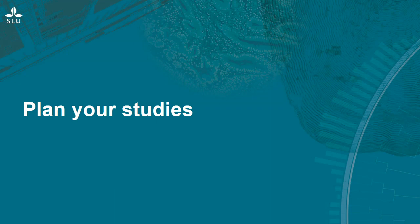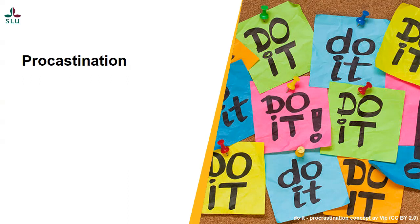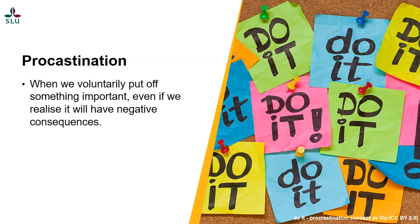Let's talk about time management. Do you often delay things you have to do? Then you're not alone. There is something called procrastination, and the definition is when we voluntarily put off something important, even if we realize it will have negative consequences. But why do we procrastinate? Some reasons might be difficult assignments — the tougher the task, the more we often procrastinate, even if we know it's a bad idea in the long run. It can be an acquired habit. It is human to prefer pleasant activities and short-term rewards. Impulsive people tend to procrastinate more often, and some studies show that night people procrastinate to a higher degree. Procrastination is also linked to perfectionism, angst, and fear of failure.